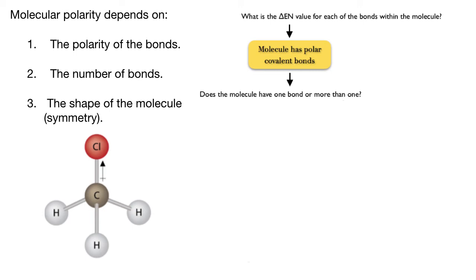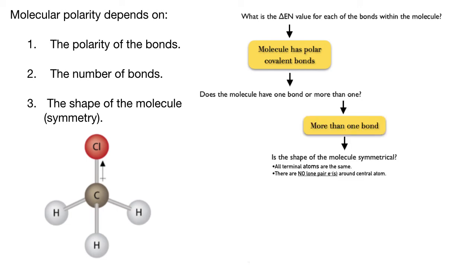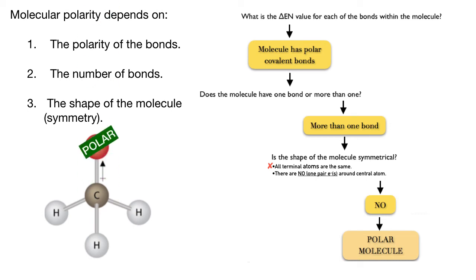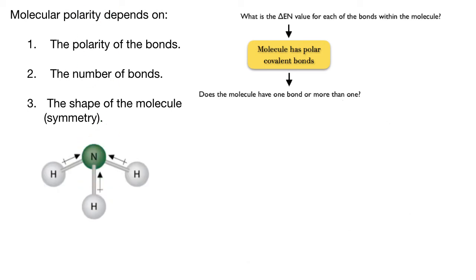Now let's take a look at methyl chloride. This molecule has three non-polar carbon-to-hydrogen bonds, but one polar bond between carbon and chlorine. Not all of the terminal atoms are the same — three are hydrogen, but one is chlorine. So both rules of symmetry don't apply, and as a result, the molecule is polar. Methyl chloride is polar.